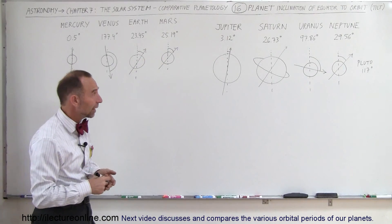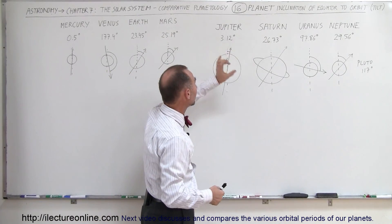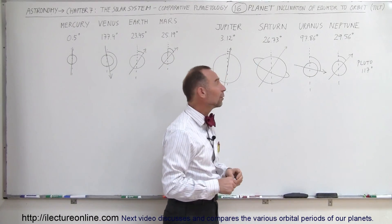Now how does that compare to the gas planets? Well, Jupiter, just like Mercury, has a very small tilt—3 degrees. Saturn is much more in line with Earth and Mars at 26.7 degrees.